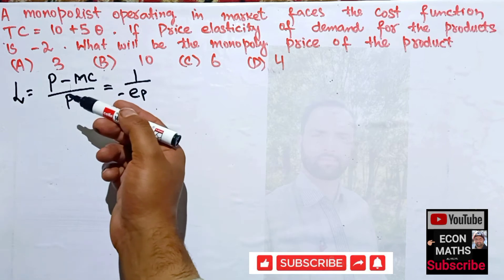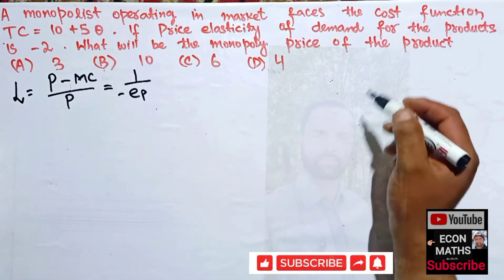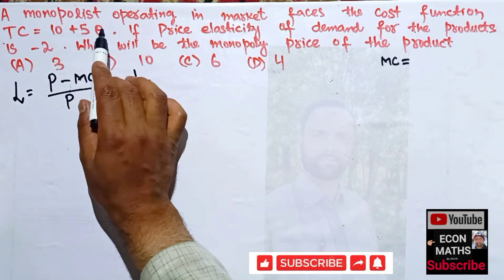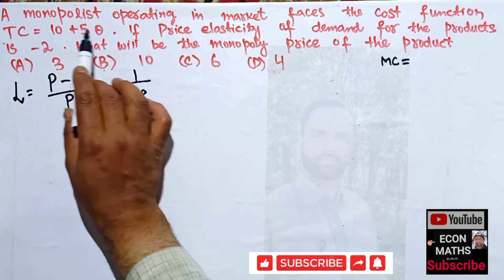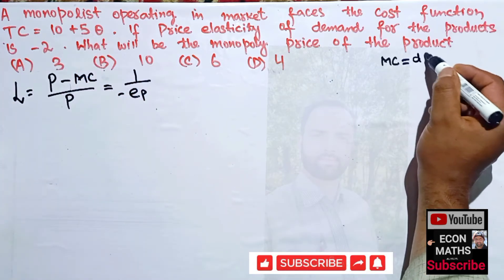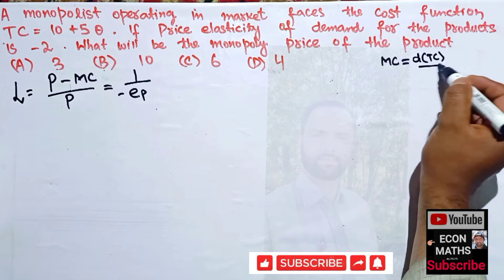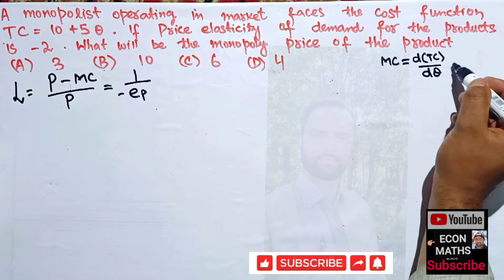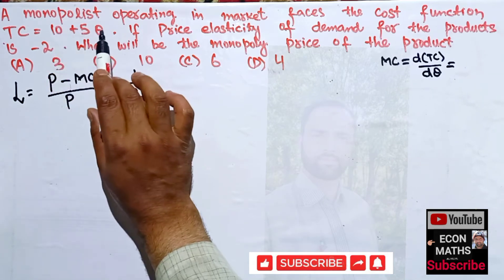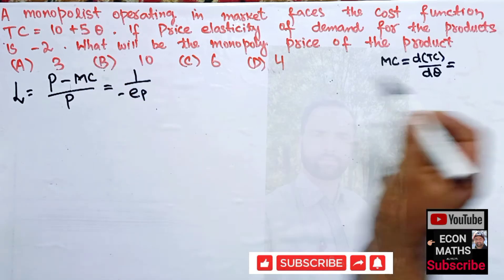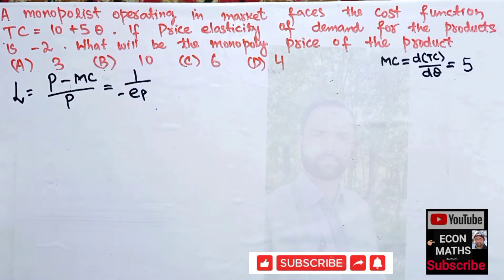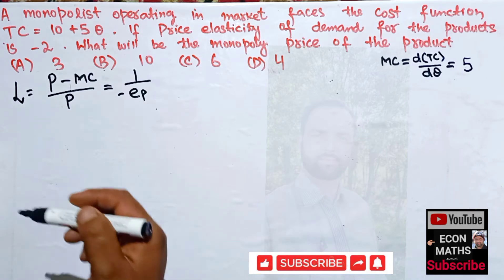First we will find the marginal cost. Our total cost is given as TC = 10 + 5Q. Marginal cost is dTC/dQ. The derivative of a constant is 0 and the derivative of Q is 1, so we get 5 × 1. Therefore our marginal cost is 5.